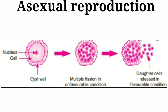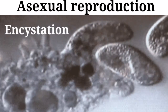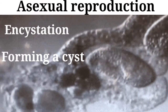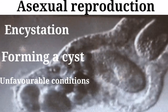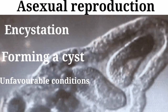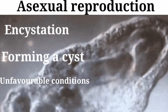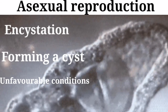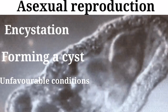The next type of asexual reproduction is encystation. Encystation is a process of forming a cyst or becoming enclosed in a capsule under unfavorable conditions. The amoeba withdraws its pseudopodia and secretes a three-layered hard covering around itself called a cyst. This phenomenon is called encystation.